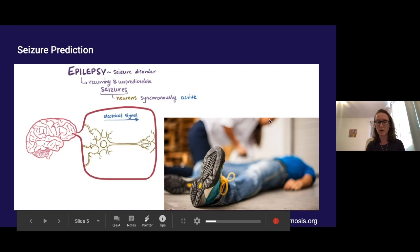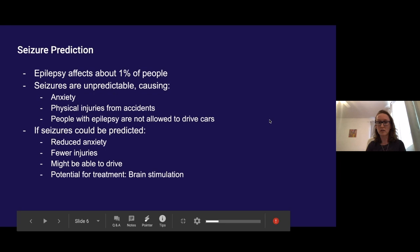Epilepsy affects about 1% of people across the globe and disproportionately so in the developing world. The fact that seizures are unpredictable in particular causes anxiety for sufferers. They will suffer physical injuries from accidents because they didn't see an oncoming seizure, and also in most countries people with epilepsy understandably are not allowed to drive cars.